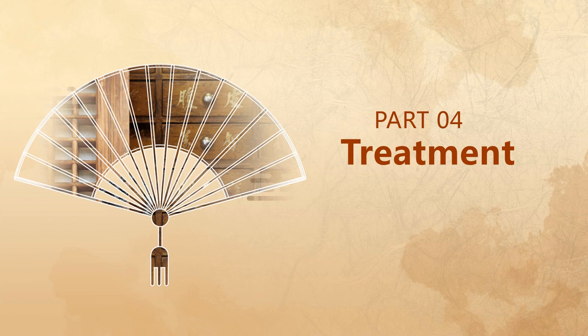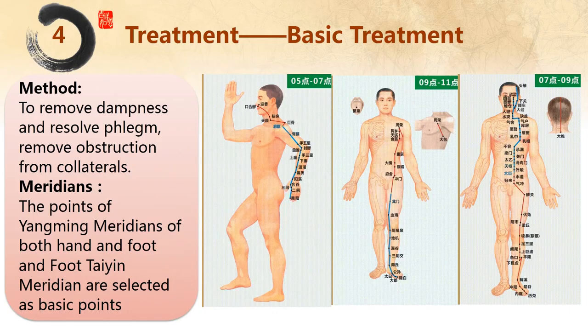The next part is the treatment of acupuncture. Acupuncture treatment is the key concept of this lesson. Acupuncture treatment of obesity can be divided into basic treatment and alternative treatment.